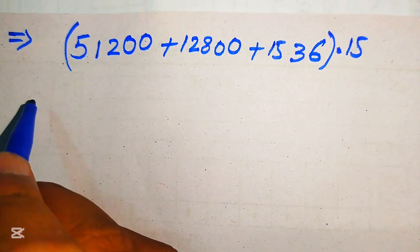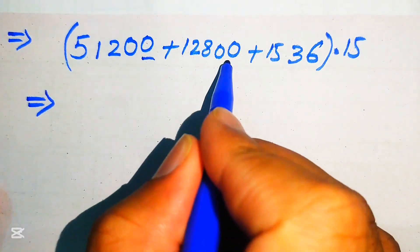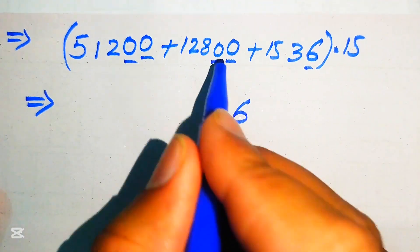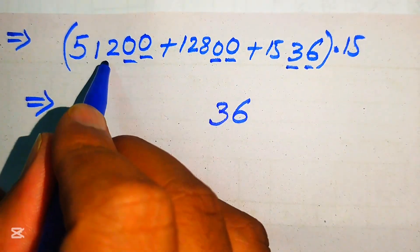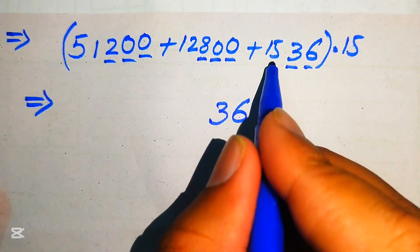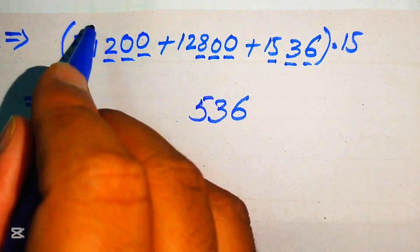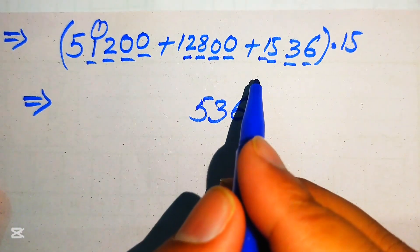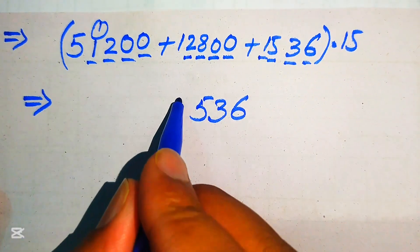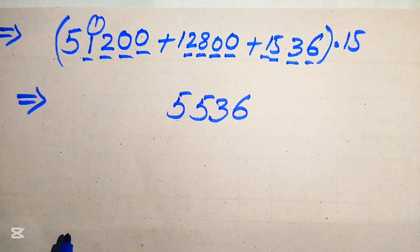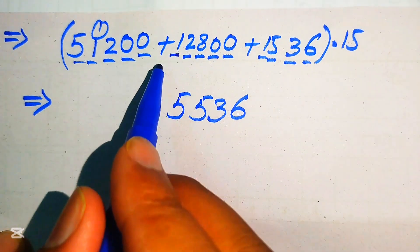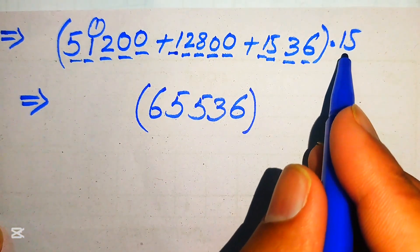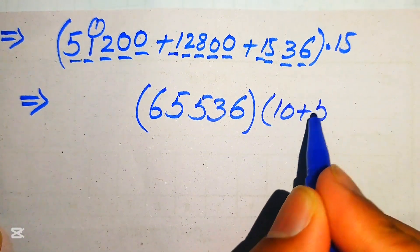We sum up all three partial products: 51200 + 12800 + 1536. Adding column by column: 0+0+6=6; 0+0+3=3; 2+8+5=15, write 5 carry 1; 1+2+1=4, plus 1 carry gives 5; then 5 and 6, resulting in 65536. This is multiplied by 15, which we write as 10 plus 5.